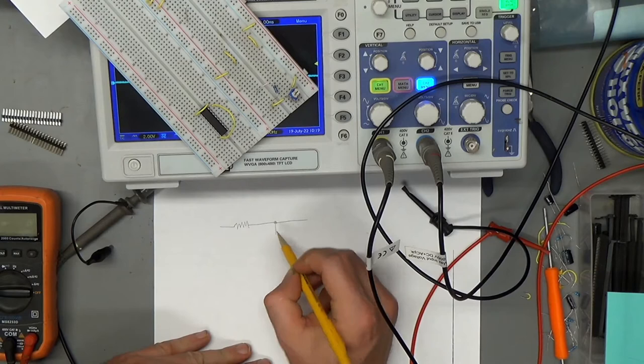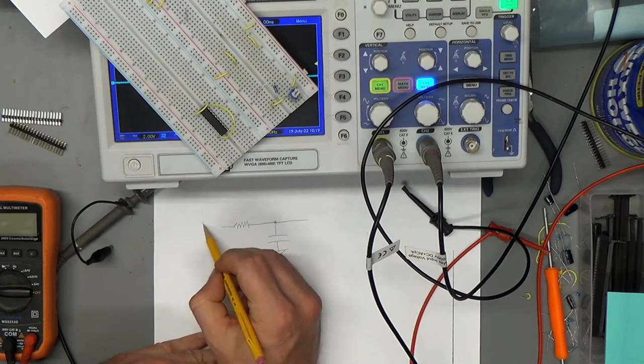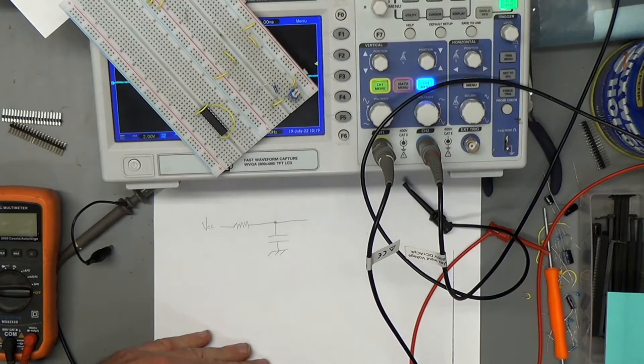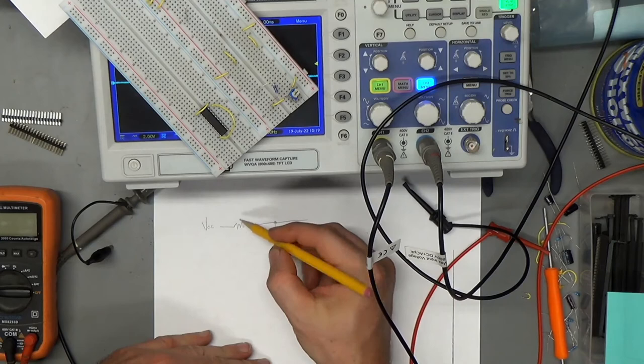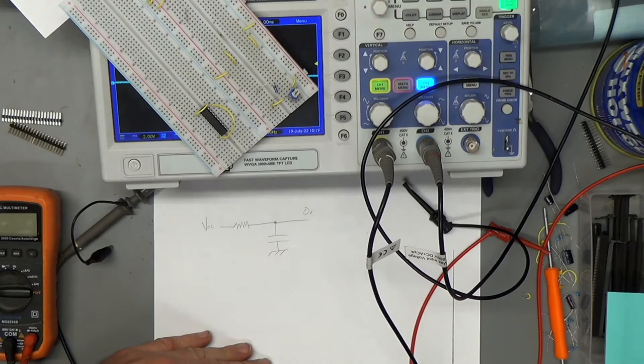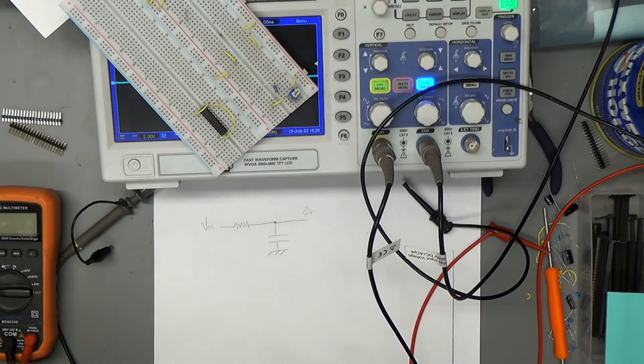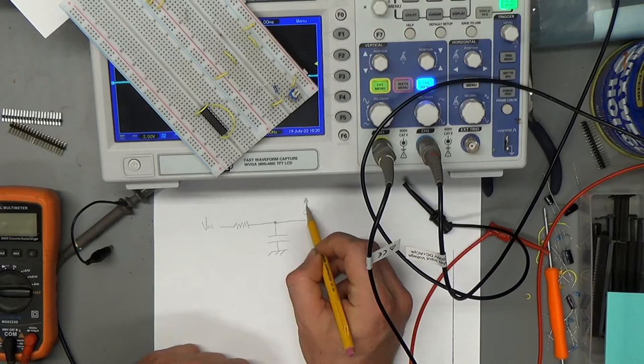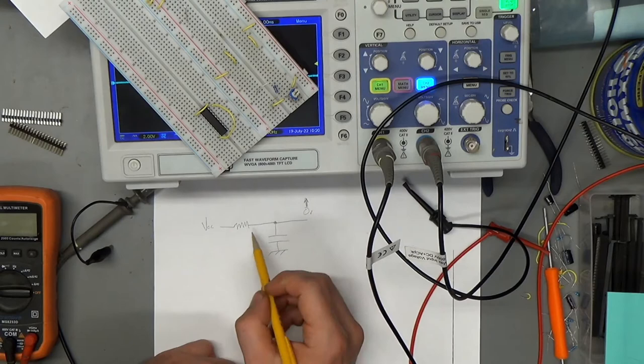And when we apply voltage here, all right, this capacitor begins with no charge, so it's not blocking any DC when it has no charge. So that'll pull this voltage here to zero volts at first when the capacitor first begins to charge through this resistor. And as the capacitor charges, this voltage will slowly rise until it matches the input voltage. And the rate at which that voltage rises is governed by the value of the resistor and the capacitor.